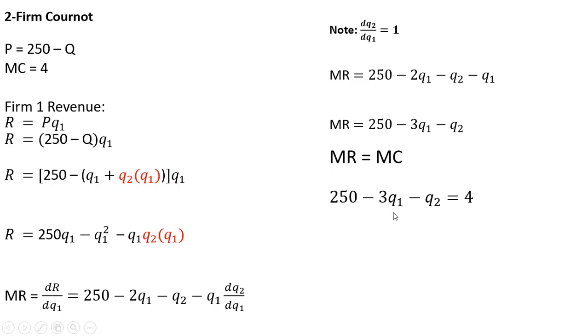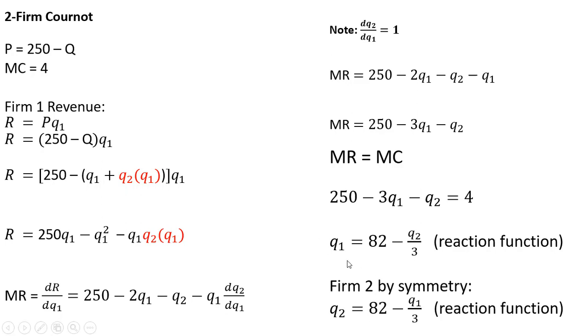Solving for Q subscript 1, we get firm 1's reaction function. Firm 2, by symmetry, since we have the same cost structure here, firm 2's reaction function is just going to be the mirror image of firm 1's.